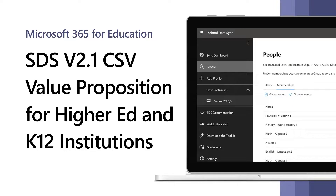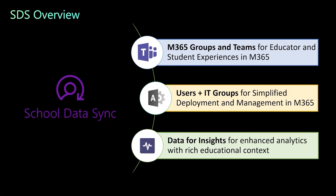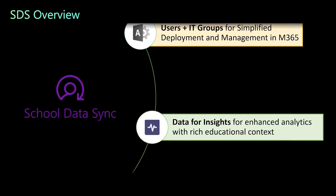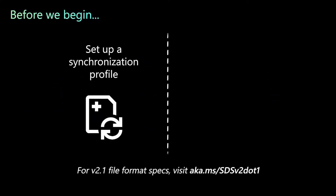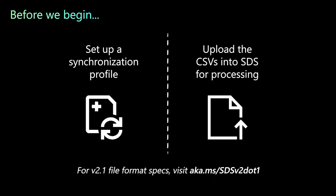School Data Sync allows you to use Comma Separated Value files to import and synchronize your Student Information System data to Microsoft 365. SDS can sync students, teachers, schools, sections, and roster information from your SIS to Azure Active Directory and Microsoft 365. To use this method, you will need to set up a synchronization profile and upload the CSVs into SDS for processing.